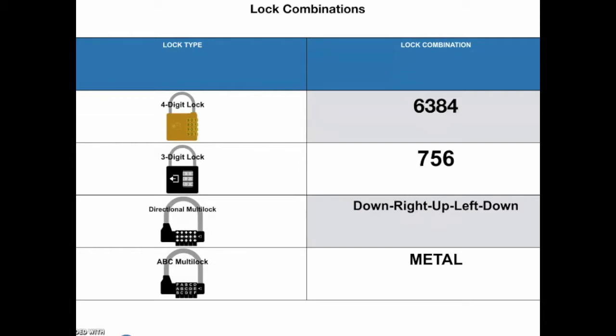Directional multi-lock is set to down, right, up, left, down. And the ABC multi-lock is set to metal.